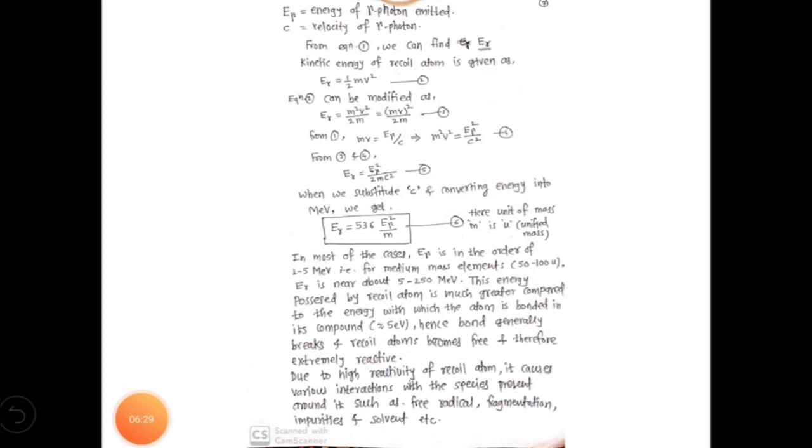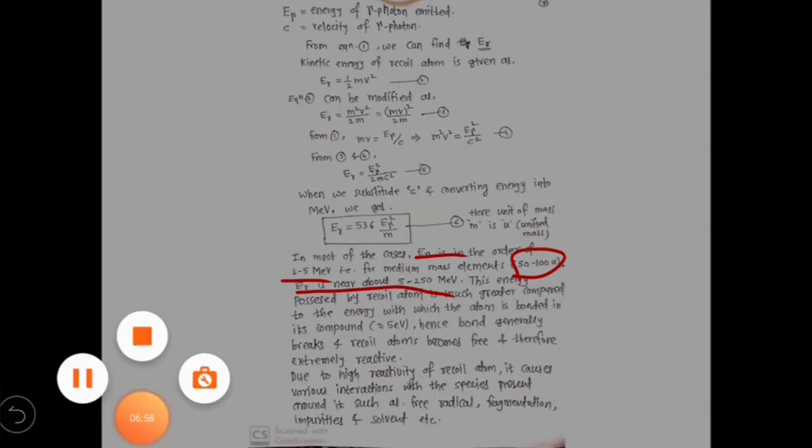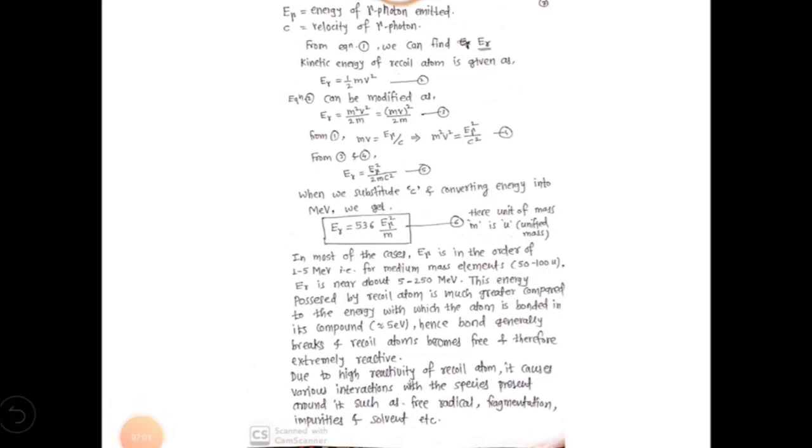From this above equation number 6, we can say that, as for most of the cases E_gamma is in the order of 1 to 5 million electron volts, therefore for a medium mass nucleus (whose mass ranges from 50 to 100 atomic mass units), we can say that E_r—that is, energy of recoil atom—varies about 5 to 250 meV.